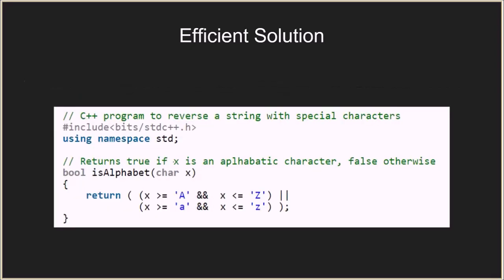Now let's look at the code. First we have a helper method 'bool isAlphabet' which checks whether the input character is alphabetic or not. It checks if X is greater than or equal to capital A and less than or equal to capital Z, or if X is greater than or equal to small a and less than or equal to small z. If that is the case it returns true, otherwise it returns false.